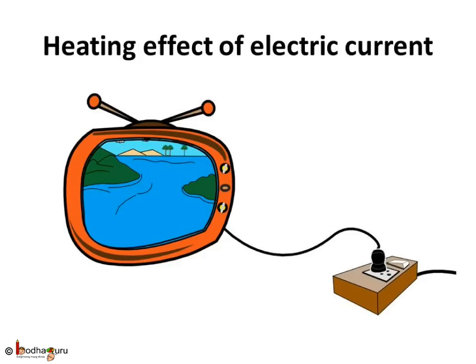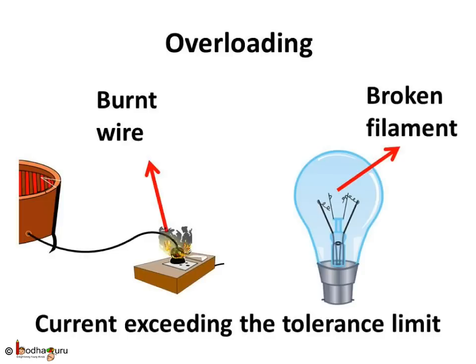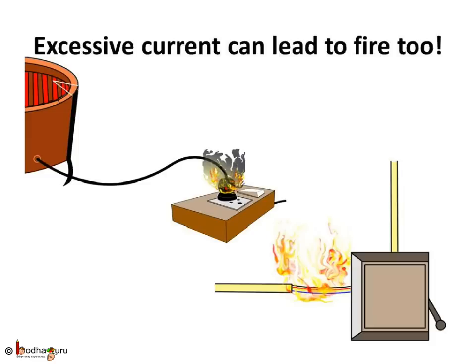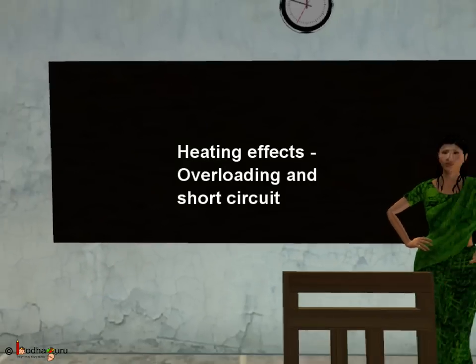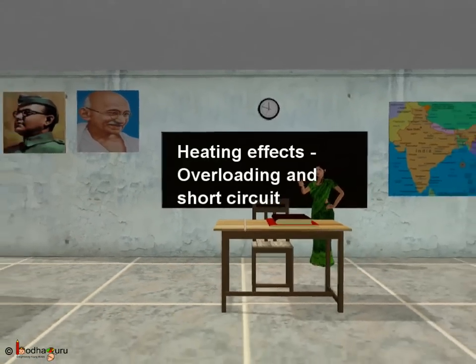Now, let us summarize what we understood today. The wire gets hot when an electric current passes through it — this is the heating effect of the electric current. When the current flow through a circuit exceeds its tolerance limit, it is called overloading. Overloading can lead to hazards like damaging the appliances, melting or burning of wires, and in the worst case, can also lead to fire. All these unfortunate incidents can be avoided to a greater extent by taking certain preventive measures, which we shall learn in our next class. Till then, bye bye and take care.